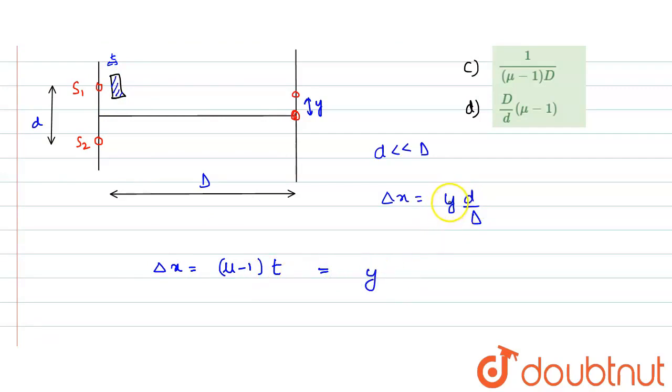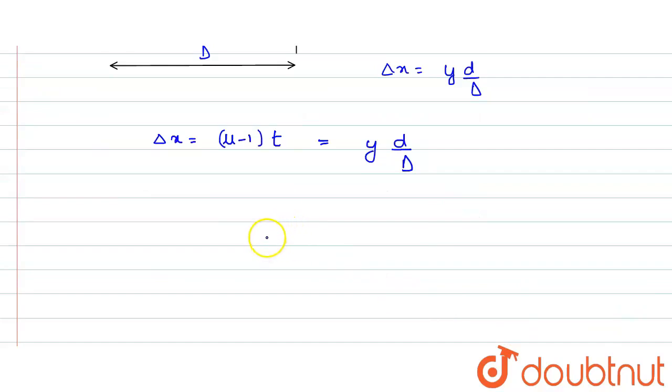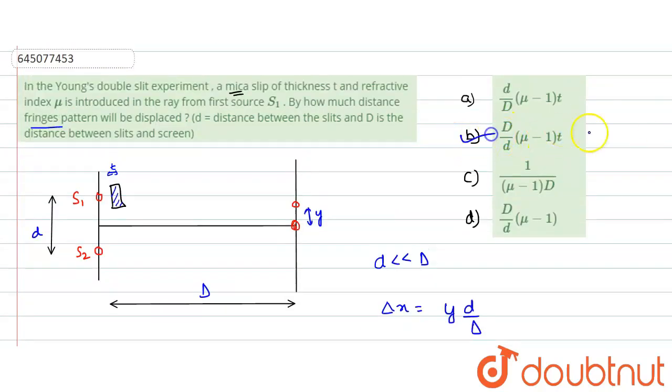So D divided by capital D, from this expression directly we can get the value of our y as D divided by capital D times (μ - 1) into t. So which is the correct option? Capital D by d (μ - 1) into t, that means B is our correct option. Hope you understood this solution, thank you.